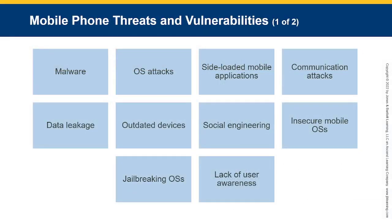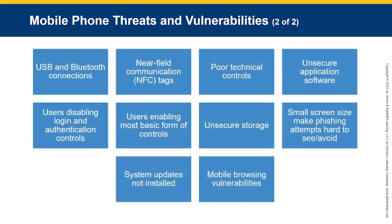Some of the mobile phone threats include malware, OS attacks, sideloading of mobile applications, communication systems that have leakage, outdated devices, social engineering, insecure mobile OSs, jailbreaking OSs, lack of user awareness, USB and Bluetooth connections, NFC tags, poor technical controls, unsecured application software, users disabling login and authentication controls, users enabling only the most basic form of controls, unsecured storage, small screen size making phishing attempts hard to see or avoid, system updates not installed, and mobile browsing vulnerabilities.